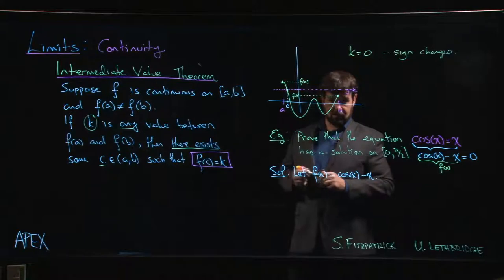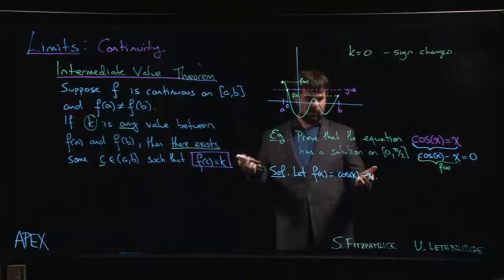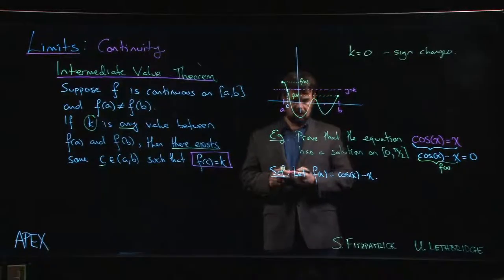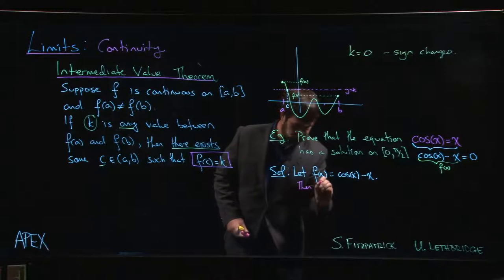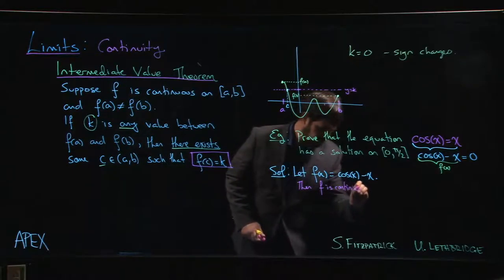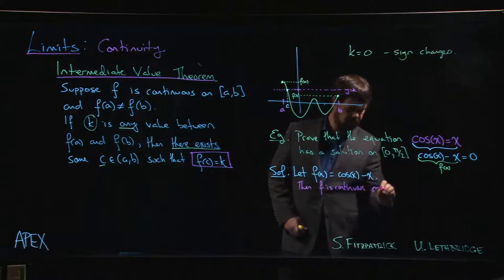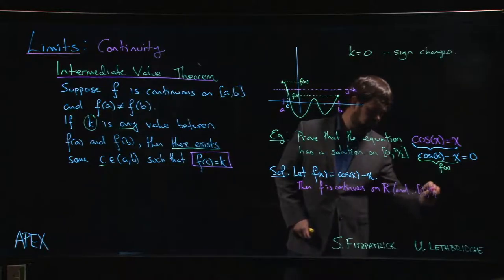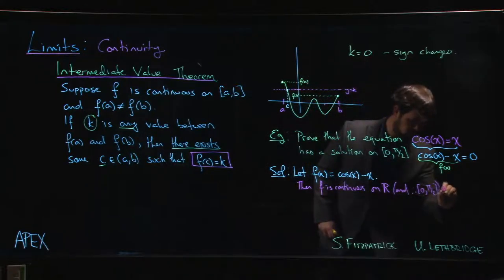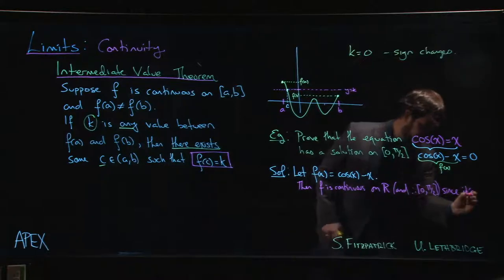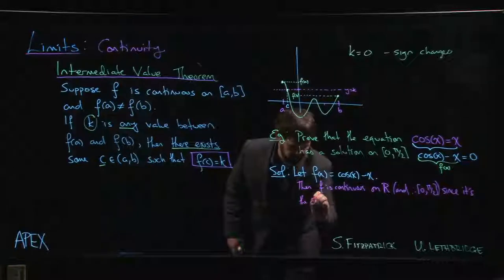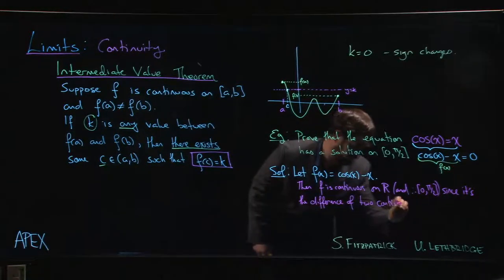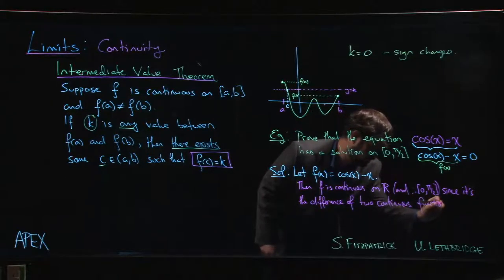So why is this function continuous? Well, we know that cosine is continuous everywhere. We know that x is continuous everywhere—it's a very simple polynomial—and we know that the difference of continuous functions is continuous. So we can state that f is continuous on ℝ, and therefore on the interval from 0 to π/2, since it's the difference of two continuous functions.